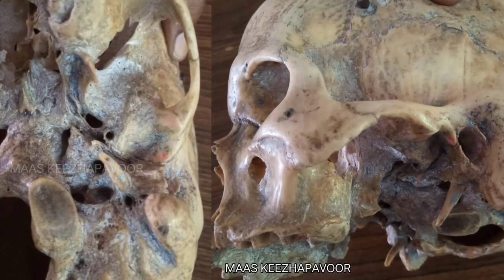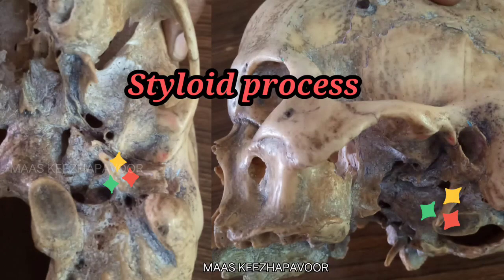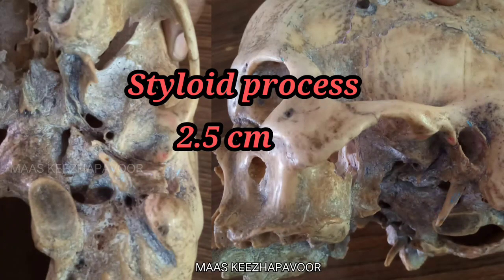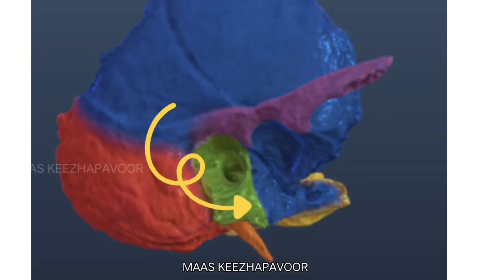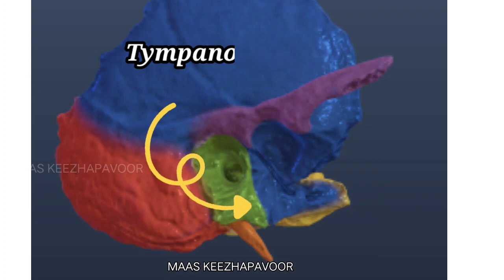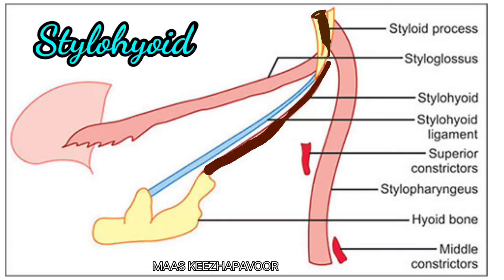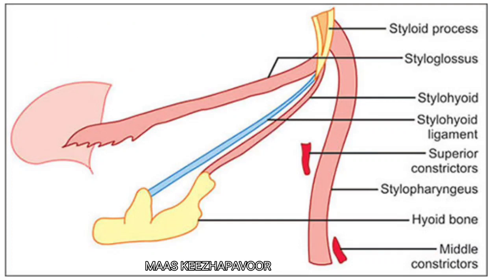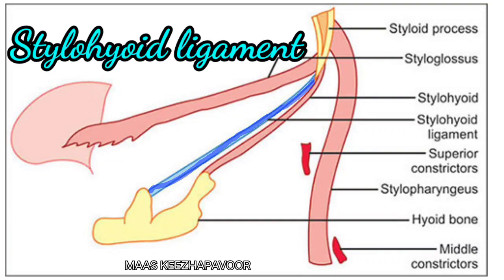Immediately lateral to the jugular foramen, a thin, pointed, slender process projects downwards and forwards from the petrous part of the temporal bone called the styloid process. It is 2.5 cm in length and derived from the second branchial arch. The styloid process near its base is sheathed by the tympanic plate; this part is called the tympanohyal part, while the uncovered part is the stylohyal part. The stylohyoid muscle takes origin from the lateral aspect of the styloid process, styloglossus from the anterior aspect near the tip, and stylopharyngeus from the upper medial part.